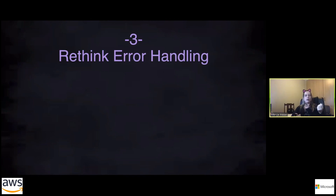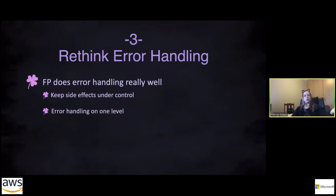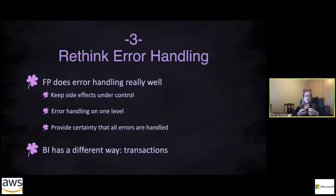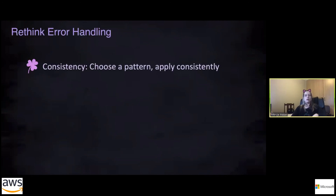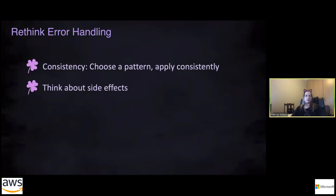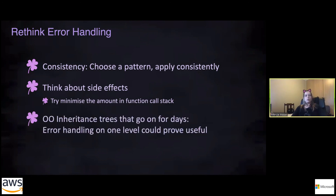Three: rethink error handling. This is where the monad story comes in. Functional programming does error handling really well — it keeps your side effects under control and error handling on one level, giving you certainty that all errors are handled. BI wraps everything in transactions and if something goes wrong, it just rolls back — same concept: you contain and keep control of your pieces. In any paradigm, choose a pattern and apply it consistently. Think about your side effects and see if you can minimize them in your function call stack.